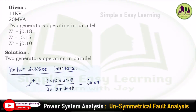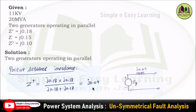First, positive sequence impedance. For parallel operation of generators, we do the parallel combination: Z+ = (J0.18 × J0.18) / (J0.18 + J0.18), giving J0.09. This is the positive sequence impedance. The sequence network is represented with induced EMF and impedance Z+, where EG and Z+ equals J0.09.